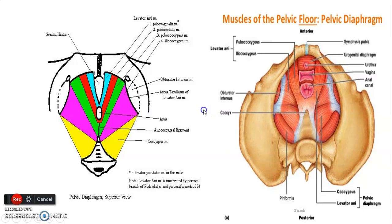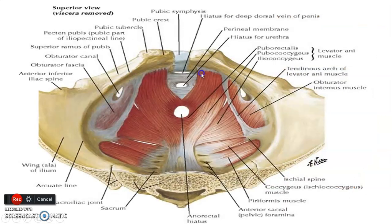Together, pubococcygeus, iliococcygeus, and coccygeus form the pelvic diaphragm. In the diagram you can see pubovaginalis in females, puborectalis at the anorectal junction, pubococcygeus, iliococcygeus — all forming levator ani — and then the coccygeus muscle.